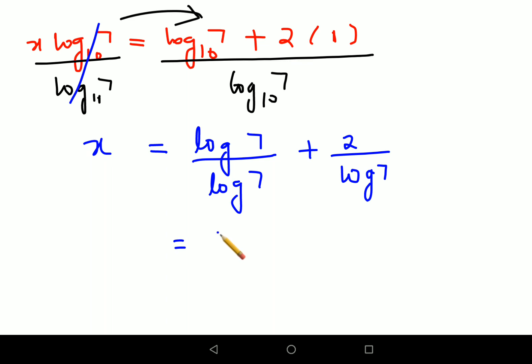So 1 plus 2 upon log 7 is one answer. If they have not given you any log books, then you can leave your answer at this point. Or if they have given you the log book, then you can actually find out the value of log 7, which is nothing but 0.8451.